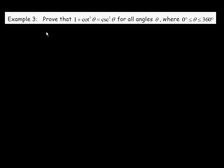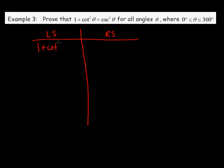Here's example three. We want to do a left side, right side check. The left side is 1 plus cotangent squared theta, and the right side is cosecant squared theta. Once we've proved those two basic trig identities, we can use those identities in order to prove other identities such as this one. We're no longer going to use the x, y, and r values because there are better ways to prove the left side equals the right side.